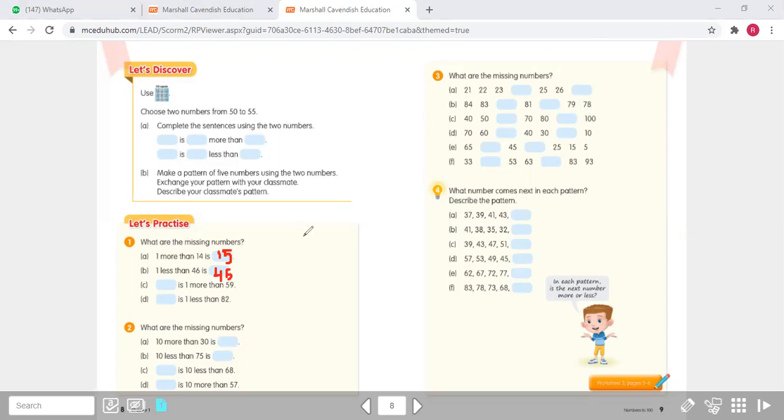Now that also happens for the other numbers. Remember, more is addition, less is subtraction. More, addition. Less, subtraction. How about question number three? What are the missing numbers? So you just need to write the missing numbers. Some numbers, some parts, maybe a little bit complicated because the differences is not only one. Bukan hanya satu, mungkin ada beberapa yang satu. There is one, there is ten. Ada yang satu, ada yang sepuluh.